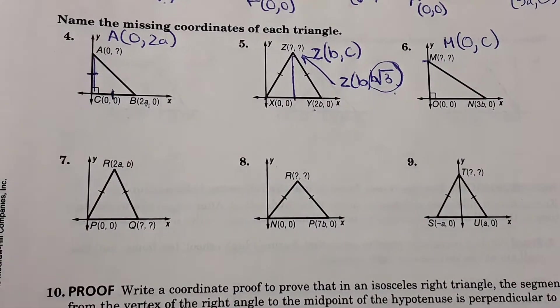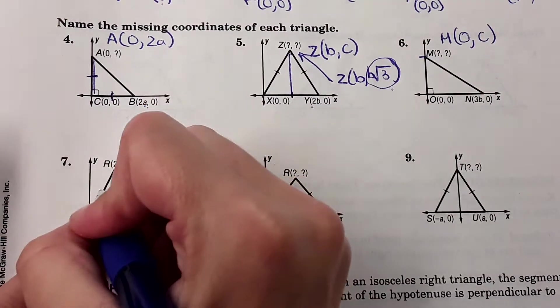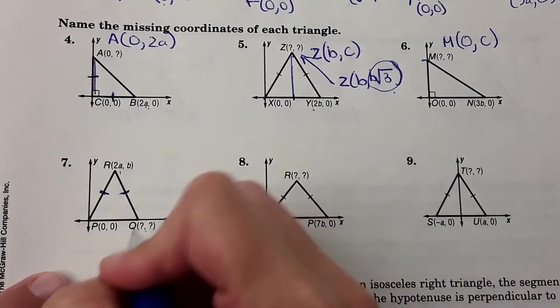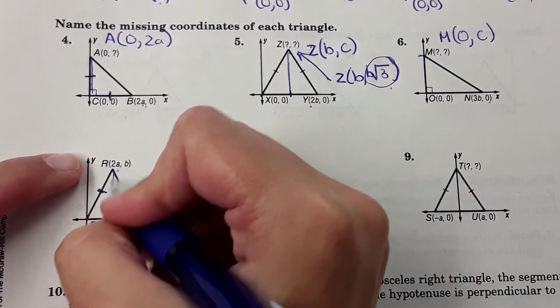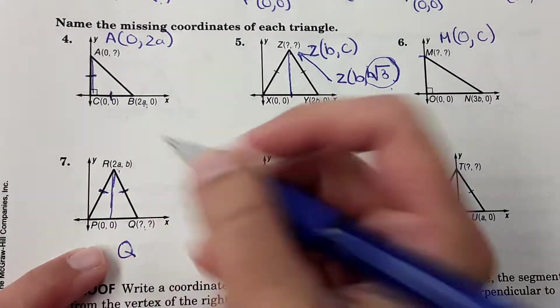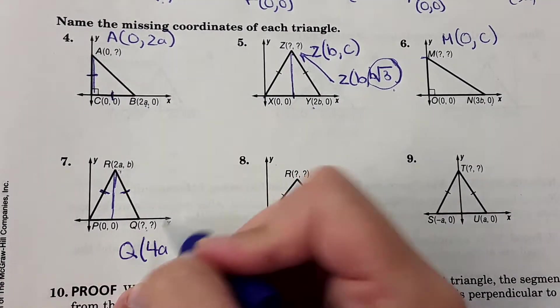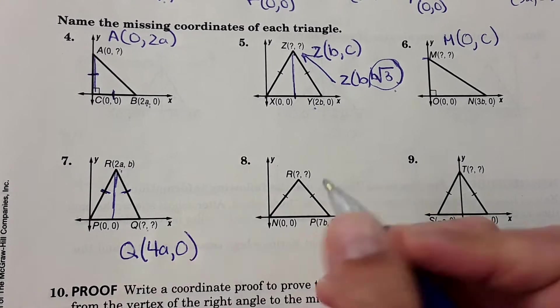Seven. Okay, isosceles. It shows us this point and then it wants to know what Q is. 2A is at the halfway point here, so Q must be at 4A, just double the 2A, and then up zero.